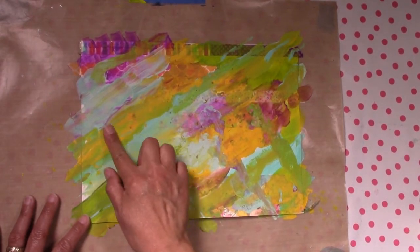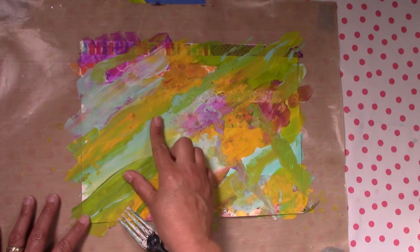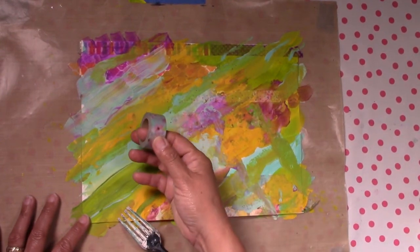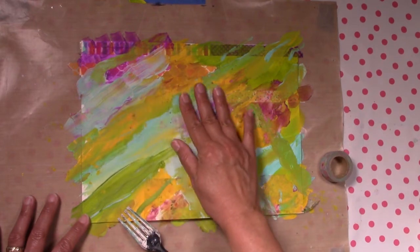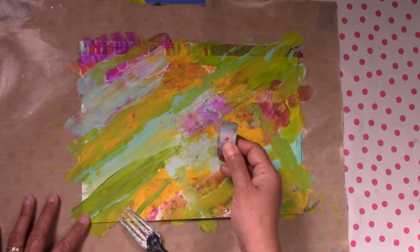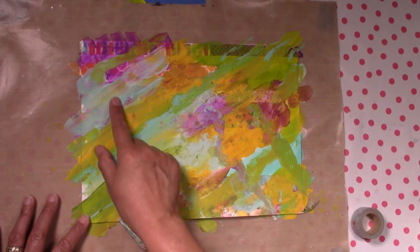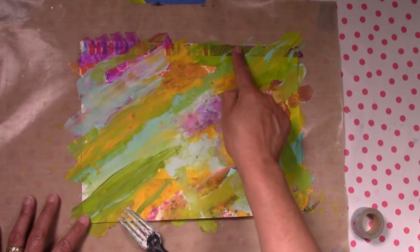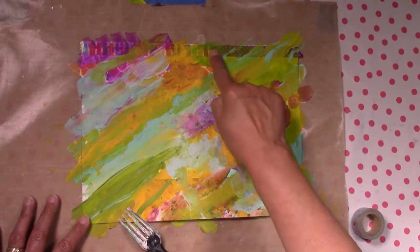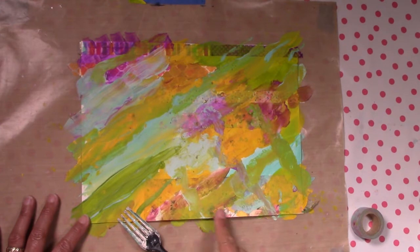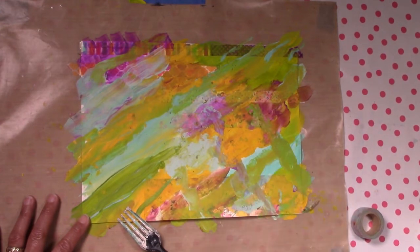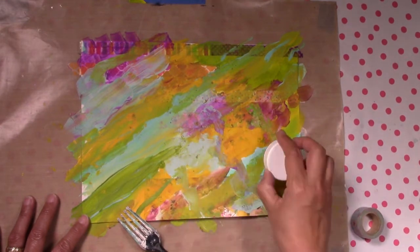I decided not to add more of the washi tape because the paint left enough texture that is not going to sit completely flat but I have enough showing through here and there that I'm happy with it. And then I'm going to be making a couple of little circles with something.